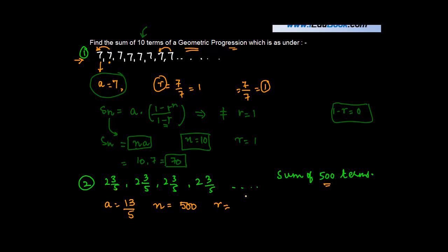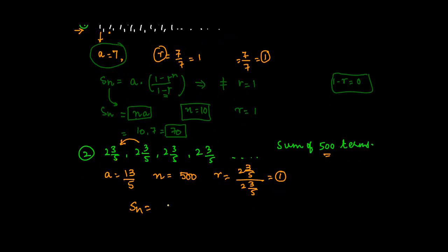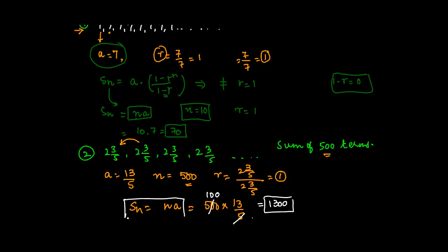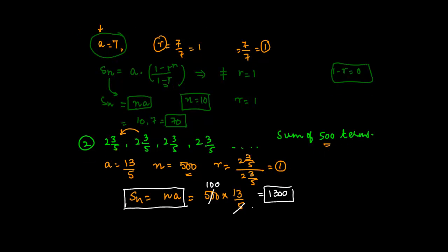The common ratio r = (13/5) ÷ (13/5) = 1. Since r = 1, the sum of n terms is Sn = n·a = 500 × (13/5). The 5 cancels with 500 to give 100, so the result is 100 × 13 = 1300. This shows how easily you can apply the formula for a GP where the common ratio equals 1.